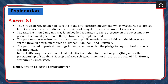The Swadeshi movement had its roots in the anti-partition movement, which was started to oppose Lord Curzon's decision to divide the province of Bengal — hence Statement 1 is correct. The anti-partition campaign was launched by Moderates to exert pressure on the government. Petitions were written, public meetings were held, and ideas were spread through newspapers such as Hitabdi, Sanjibani and Bengali. The partition led to protest meetings in Bengal under which the pledge to boycott foreign goods was first taken. In the 1906 Congress session at Calcutta, the Indian National Congress under the presidentship of Dadabhai Naoroji declared self-government or Swaraj as the goal — hence Statement 2 is correct. Hence, Option D is the correct answer.